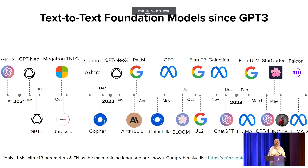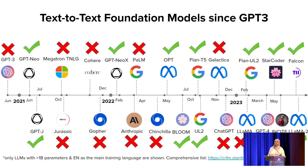This slide shows a timeline of text-to-text foundation models that have been built and trained since GPT-3. GPT-3 was released mid-2020 — it's been over three years — and as you can see, there are a lot more models being trained over the years. The symbols here indicate model access: a cross indicates closed access and a tick indicates open access.